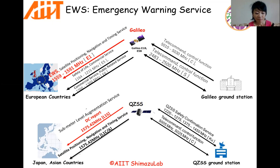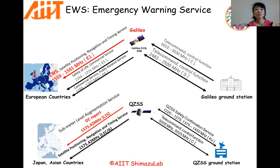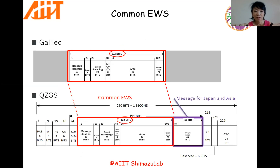On the other hand, the size of message is different. 122 bits are available for broadcasting emergency information in the case of Galileo, and 192 bits are available in QZSS. Therefore, we decided to design the message for broadcasting emergency information in 122 bits as common between Galileo and QZSS. We call it Common EWS.